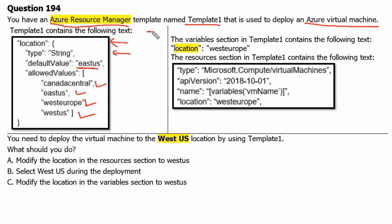The next part of the question follows. The variable section in Template1 contains the following text: the location variable is set to West Europe.